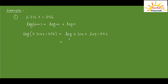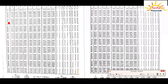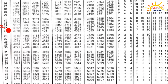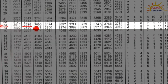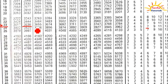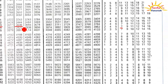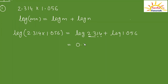How to find the log of this number was discussed in our previous lecture. This is a single digit number so its characteristic value is 0. We find the log of 23 in the first column and mean difference in the fourth column. Log of 23 is 3636 and mean difference in the fourth column is 7, which we add to get 3643. So the log of 2.314 is 0.3643.